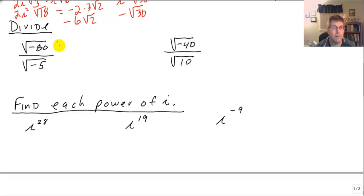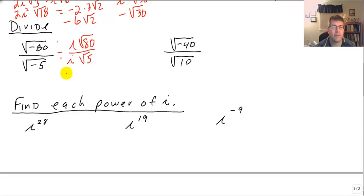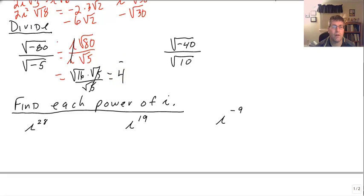Let's look at some division. The square root of negative 80 over the square root of negative 5 — let's take the i out right away. We get i radical 80 over i radical 5. The i's simplify to 1, leaving radical 80 divided by radical 5. Radical 80 splits into radical 16 times radical 5 all over radical 5. The radical 5's cancel, and our final answer is 4.